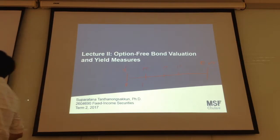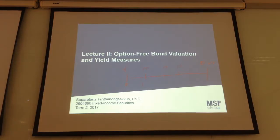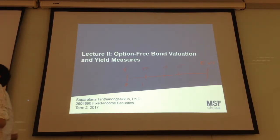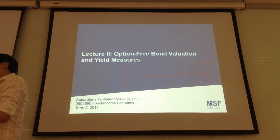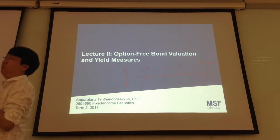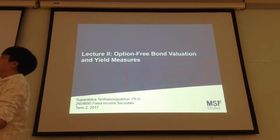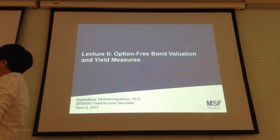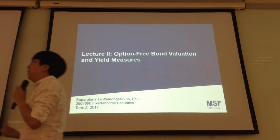For example, if a bond pays the coupon on December 15th and June 15th every six months, what if we buy the bond on January 20th? What would be the price at that time — not at the point that the bond pays the coupon? That is the issue for today's lecture. And then the last topic is about the yield — we will talk more about the definition of the yield too.